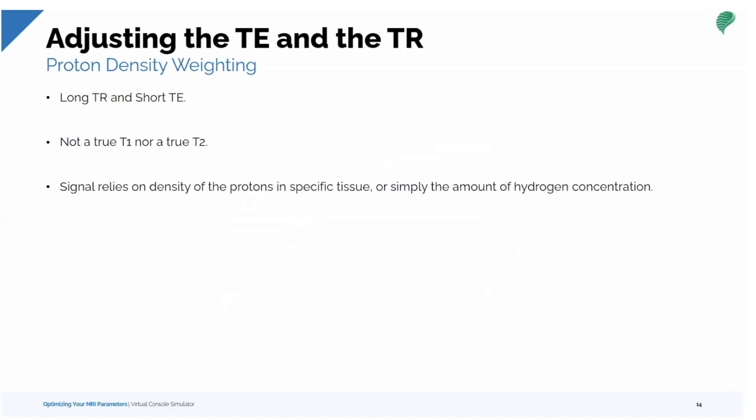For proton density: long TR, short TE. It's not T1, it's not T2. Signal relies on the density of protons — simply the concentration of hydrogen. PD weighting is used for musculoskeletal imaging, with fat saturation especially. TR times of around 2,000 to 4,000 milliseconds and TEs of 25 to 40 milliseconds is a basic proton density sequence.